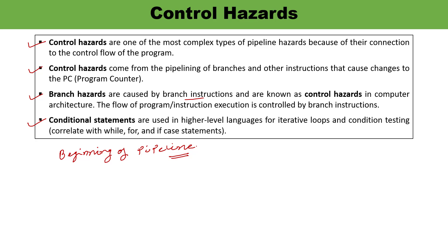To summarize this video, I talked about pipelining hazards. There are three types of hazards: structural, data, and control. Thank you so much for watching this video.